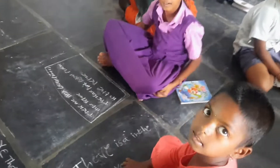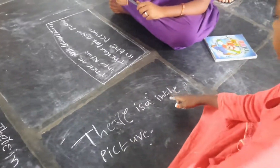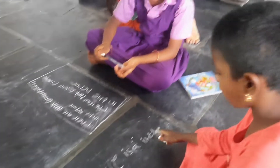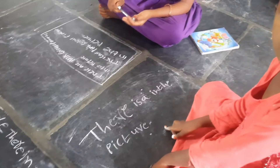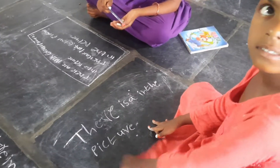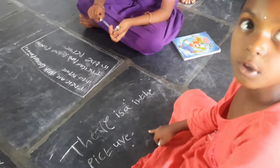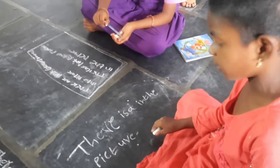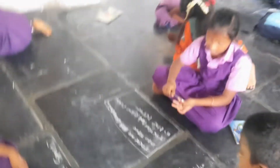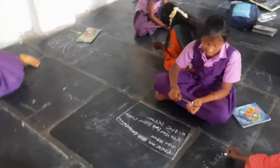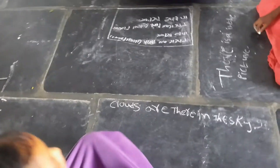Teja, what are you writing? There is a picture. What is there in the picture? Rainbow. What is your word, Rainbow? There is a rainbow in the picture. Write rainbow in your sentence.